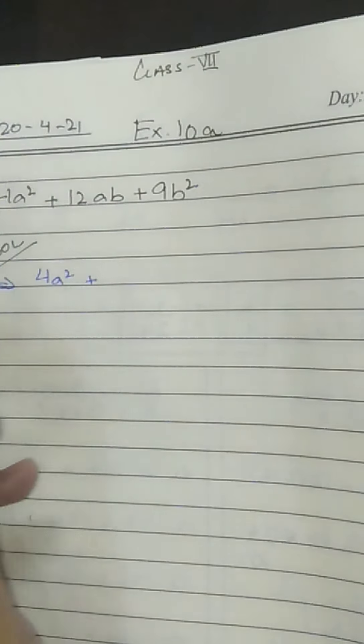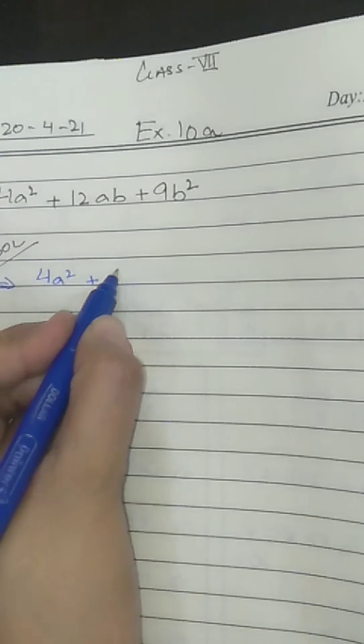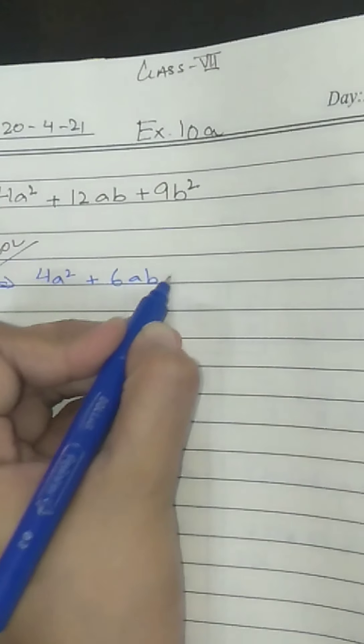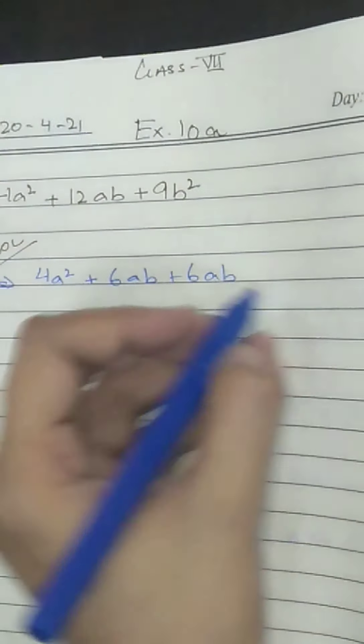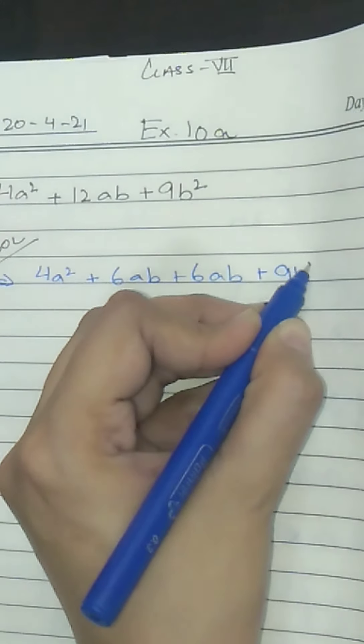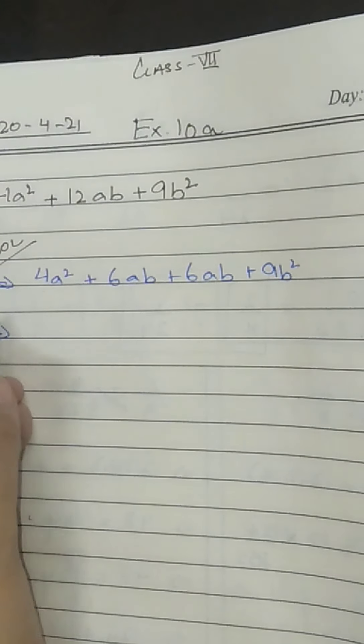So let's start with the middle term breaking. We will break this into 6 and 6 so that when 6AB plus 6AB, it would be 12AB. So we can do this. This will at least ensure that common will come from these two and common will come from these two, so we can create the factors easily.